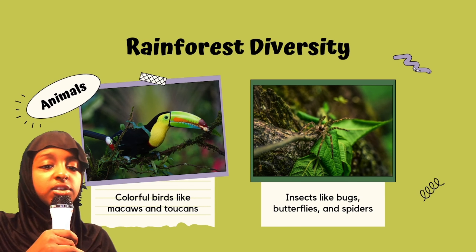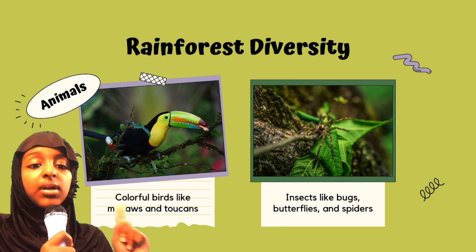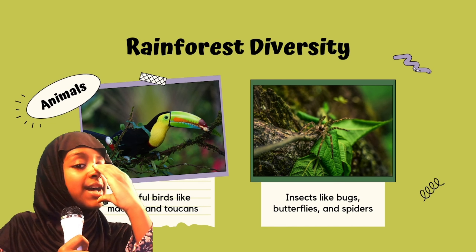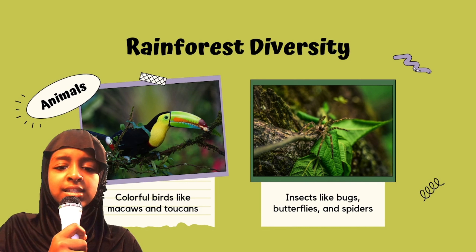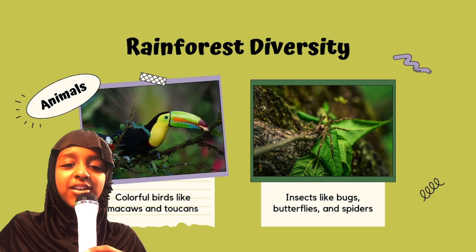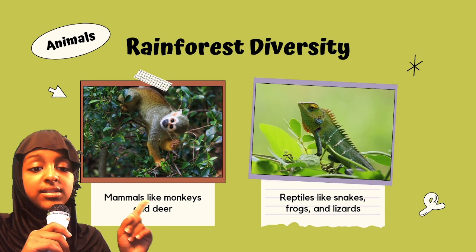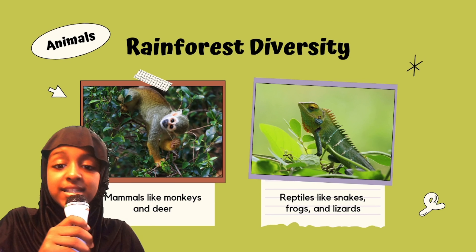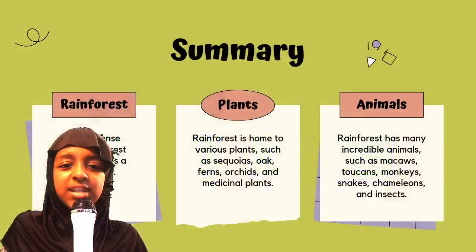Now let's talk about the rainforest diversity about animals. You can see colorful birds like macaws and toucans. This bird right here is called a toucan because you can see it has that beak. You can also find insects like bugs, butterflies, and spiders, which you can see all of those in a rainforest — very amazing. You can also see mammals like monkeys and deer. You can also see reptiles like snakes, frogs, and lizards, which is really cool because there are lots of types of animals in a rainforest.